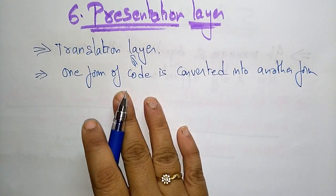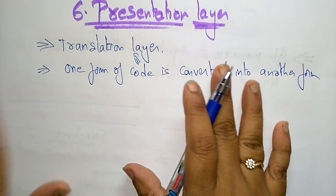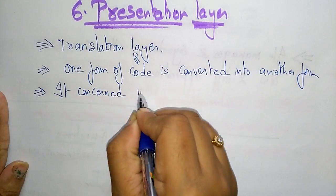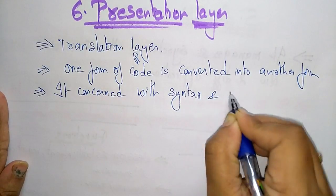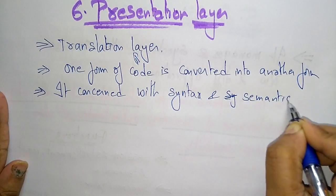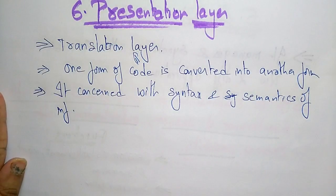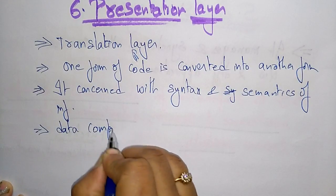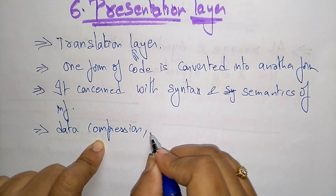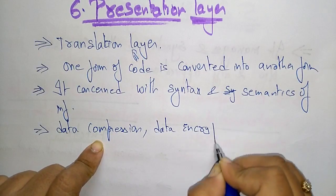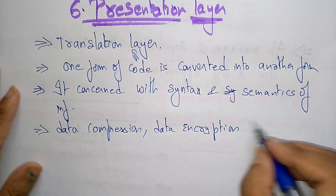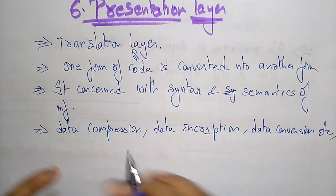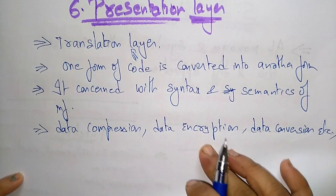The presentation layer is mainly concerned with the syntax and semantics of information. It also performs operations like data compression — whatever data is taken from the application layer is compressed — data encryption, and data conversion, where the encrypted data has to be converted back to its original form.